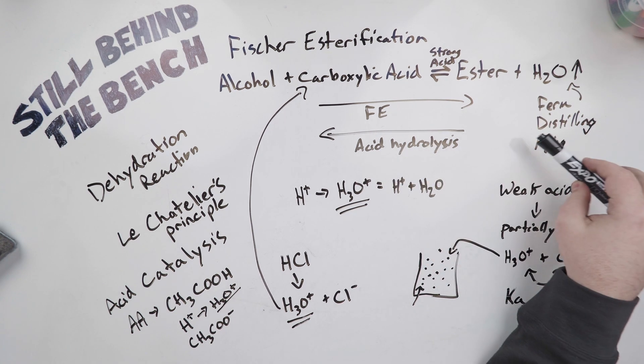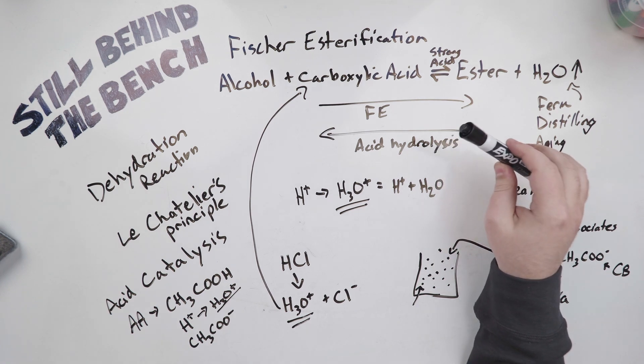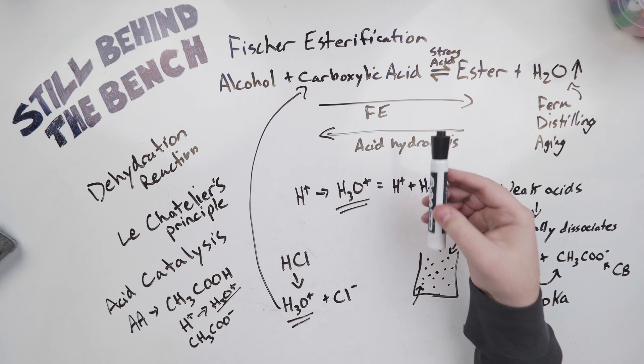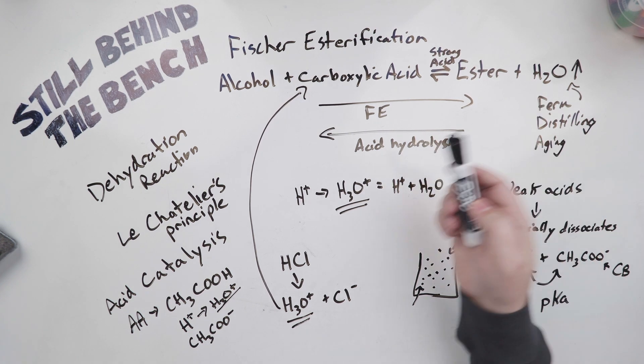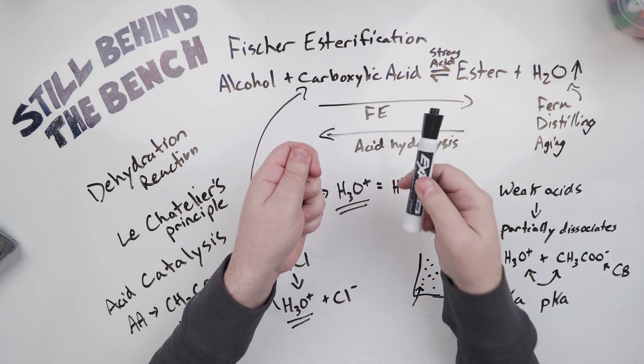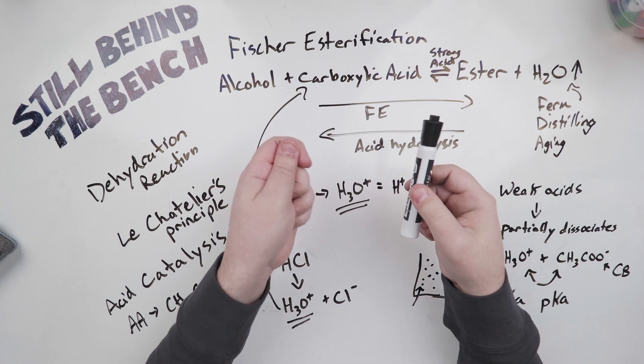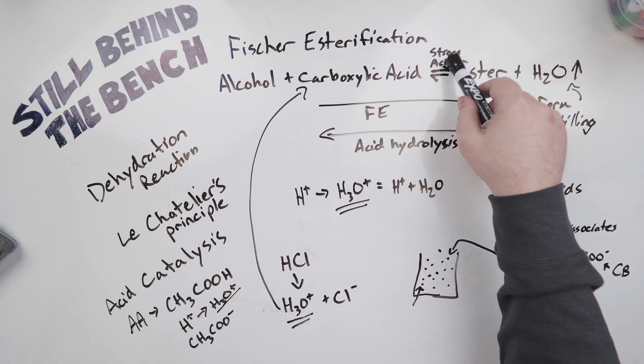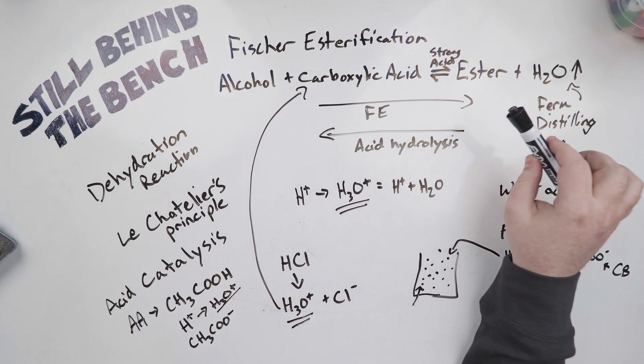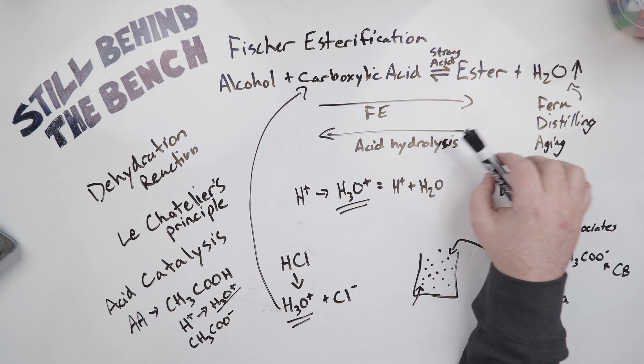Another process that can be happening in aging specifically would be transesterification. This is where you have an ester and an alcohol and the alcohol swaps out for the former alcohol that created the esters. So say you have ethyl acetate and it's sitting around with some butanol, that butanol can swap with the ethyl group and you now have butyl acetate and ethanol. But again, this requires a strong acid to be present in order for this reaction to happen, so it's going to take some very long-term aging in order for it to happen without that catalyst.